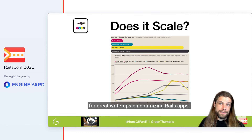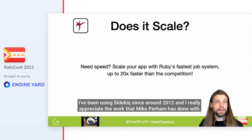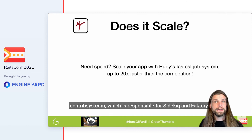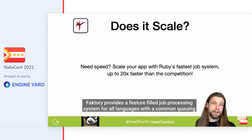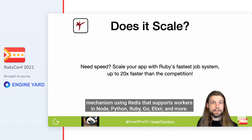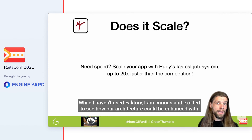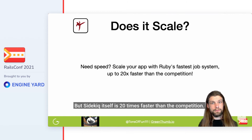I highly recommend checking out Nate Berkopec's book and giving him a follow on Twitter for great write-ups on optimizing Rails apps. I've been using Sidekiq since around 2012 and really appreciate the work that Mike Perham has done with ContribSys.com, which is responsible for Sidekiq and Faktory. Faktory provides a feature-filled job processing system for all languages with a common queuing mechanism using Redis that supports workers in Node, Python, Ruby, Go, Elixir, and more. I'm curious and excited to see how our architecture could be enhanced with background jobs across our Rails and Python codebases.